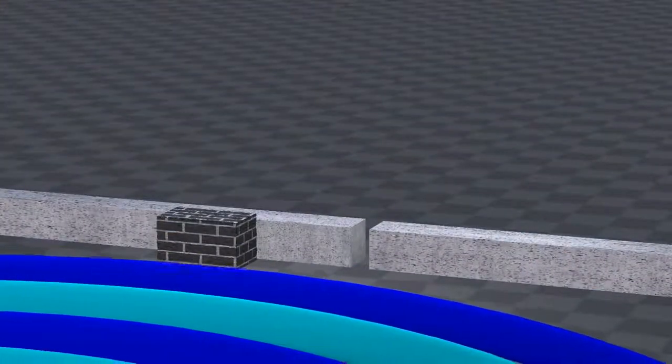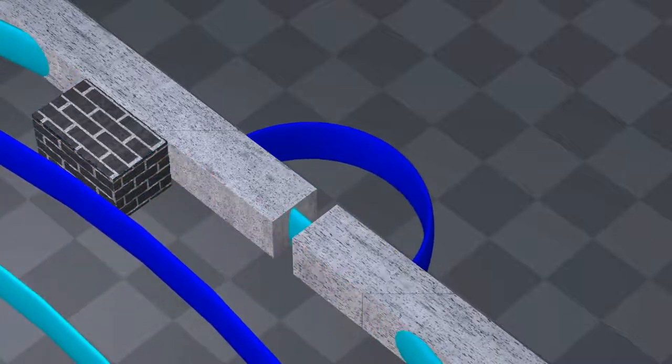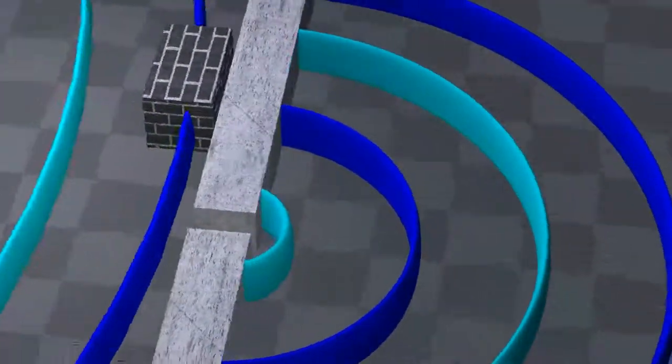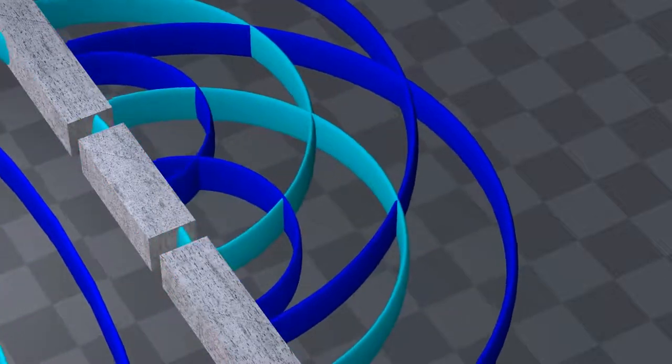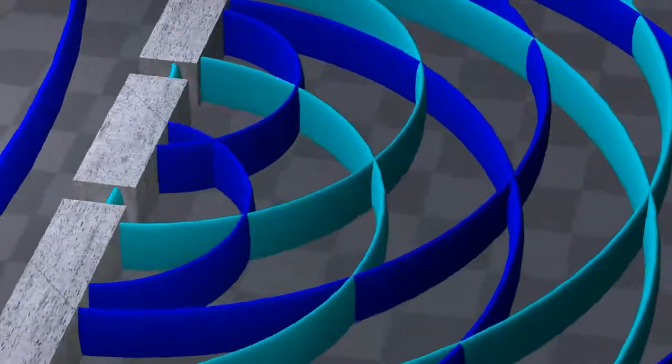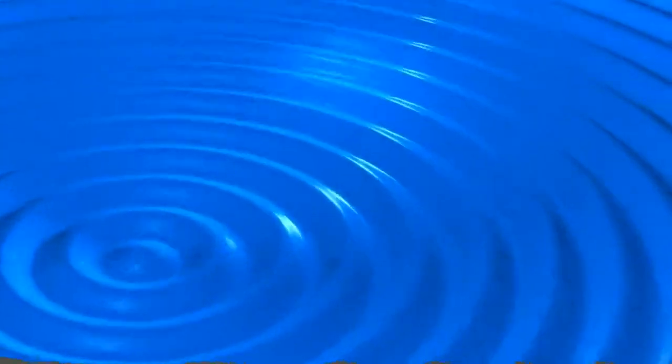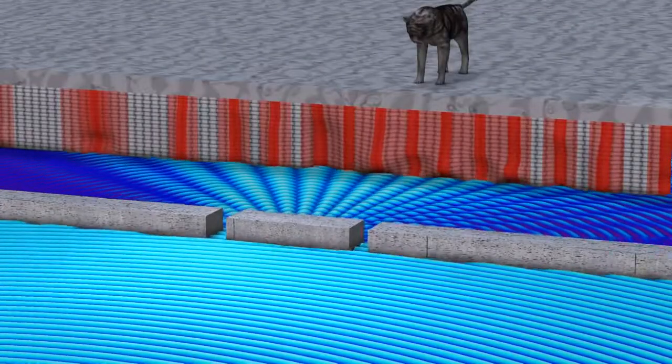Only one known phenomenon can explain this result: waves. When a wave passes through a hole, it spreads out on the other side. If there are two holes, two waves are produced. When you have two waves, they interact with one another — in some areas they strengthen each other, and in other areas they cancel each other out. This creates a striped pattern, which is the exact same pattern that we saw before.